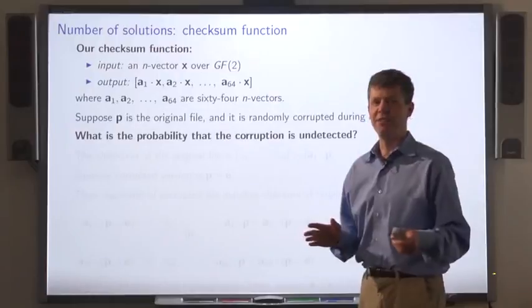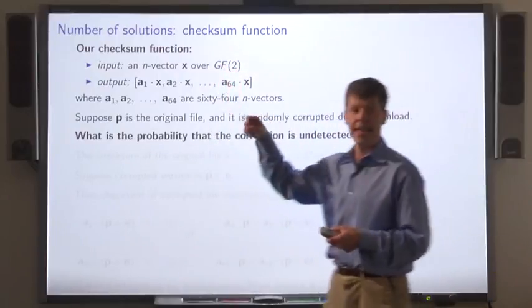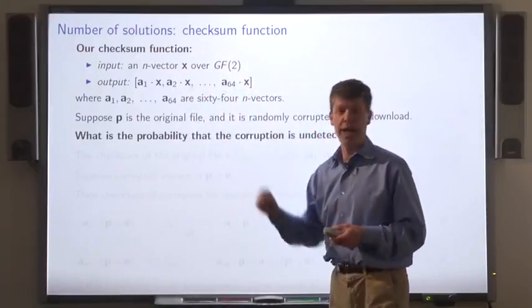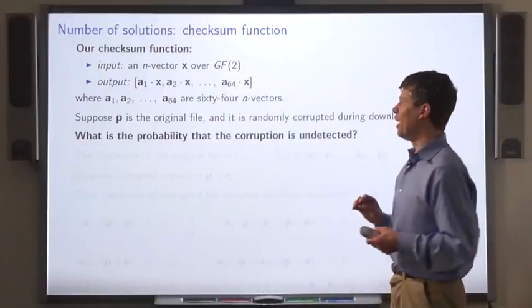So here's our checksum function: it takes an n vector x over GF2, and it outputs the dot products a1 dot x, a2 dot x, up to a64 dot x, where a1 through a64 are vectors we choose somehow.